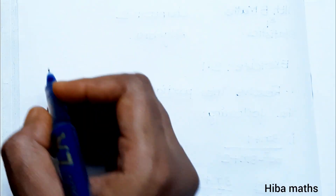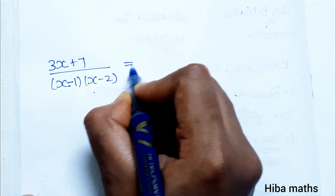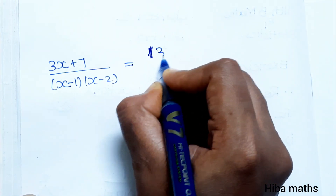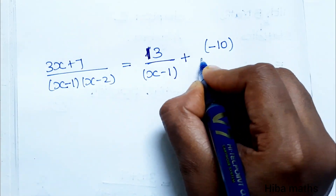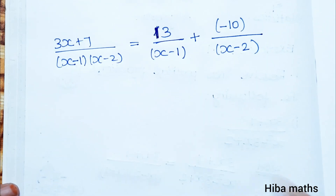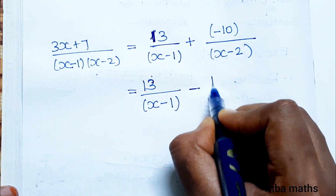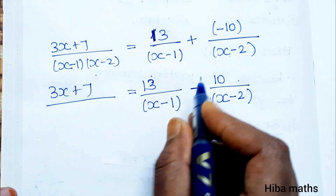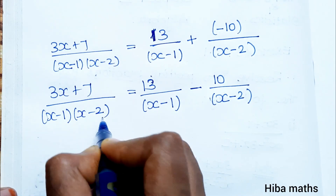Now we write the final answer. 3x plus 7 divided by (x minus 1)(x minus 2) equals A over (x minus 1) plus B over (x minus 2), which is 13 divided by (x minus 1) plus minus 10 divided by (x minus 2). So the answer is 13/(x minus 1) minus 10/(x minus 2).